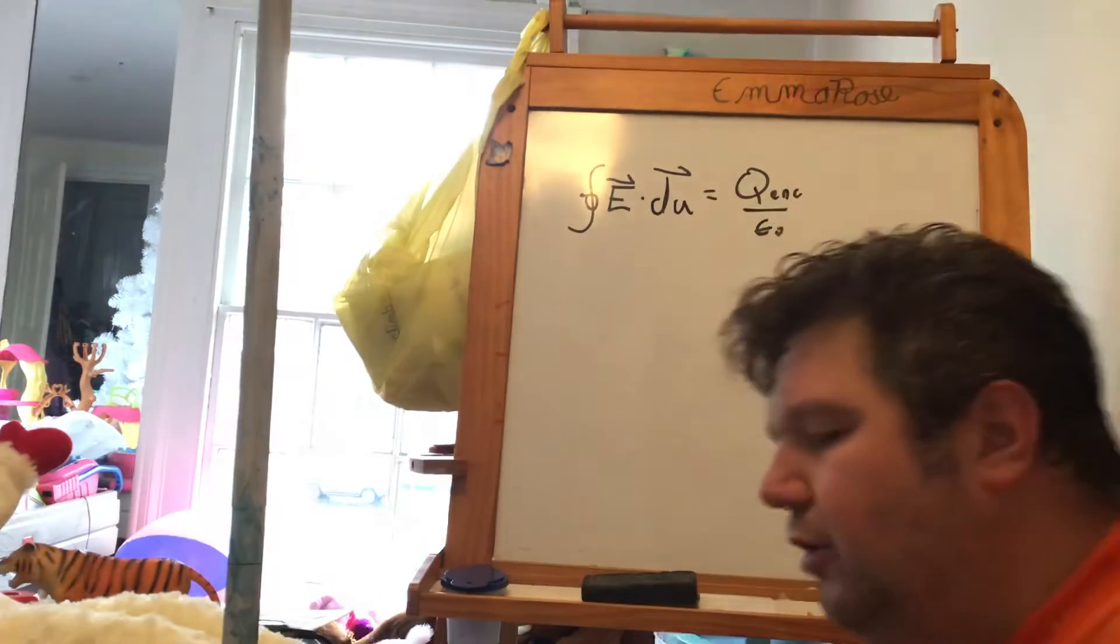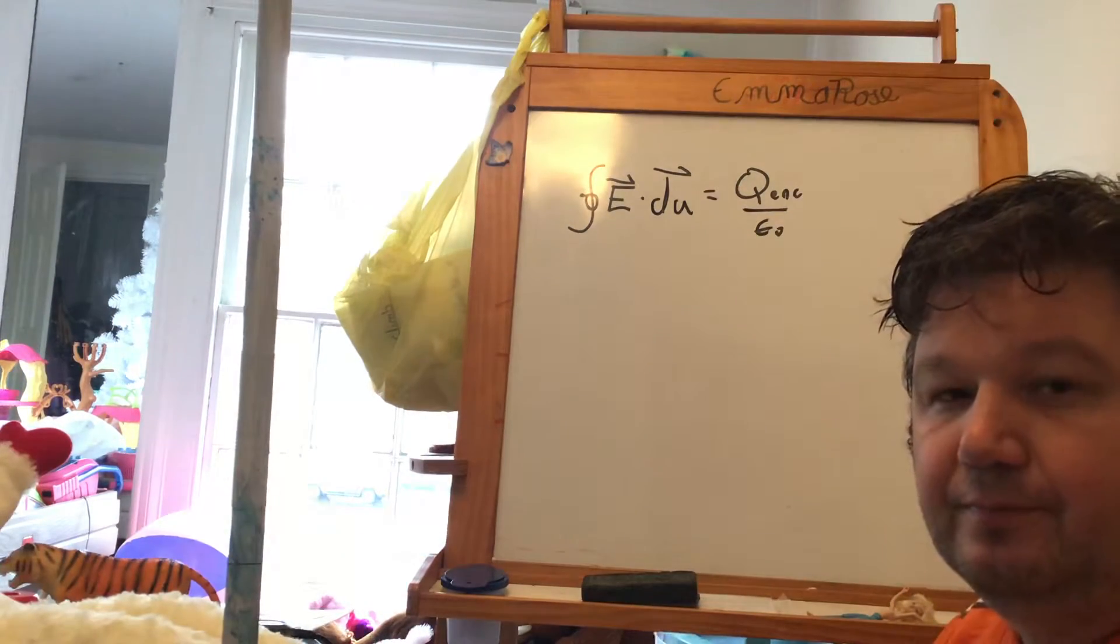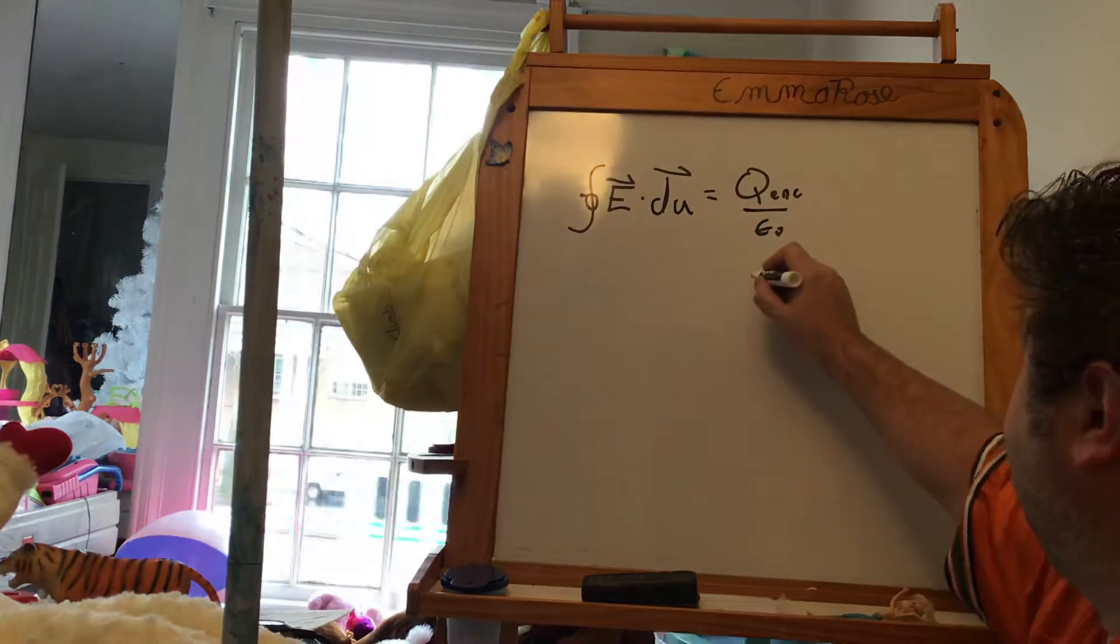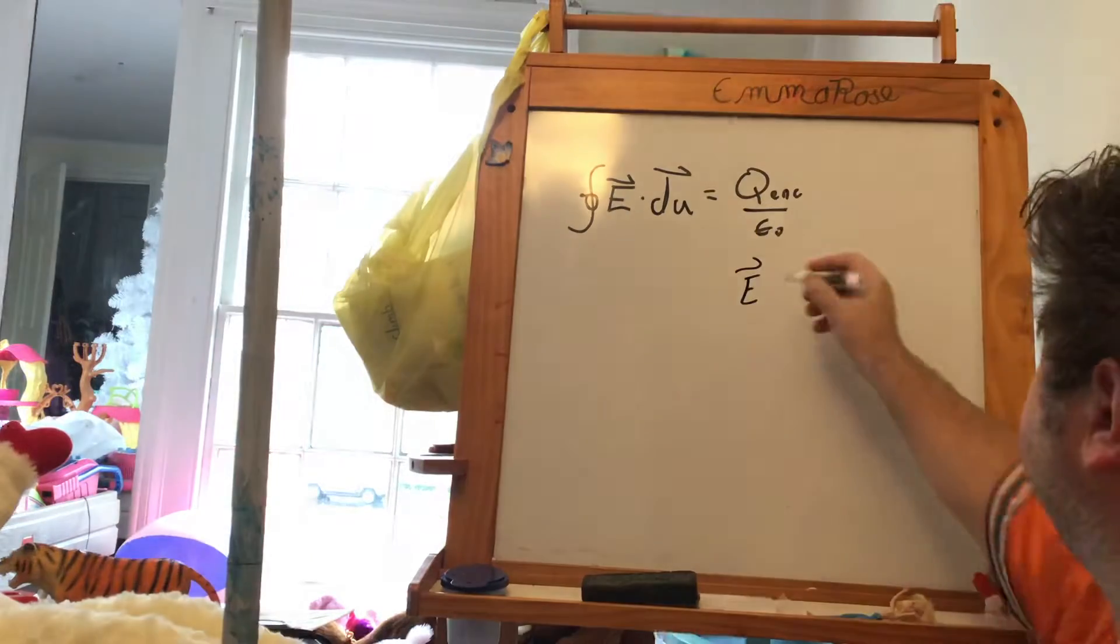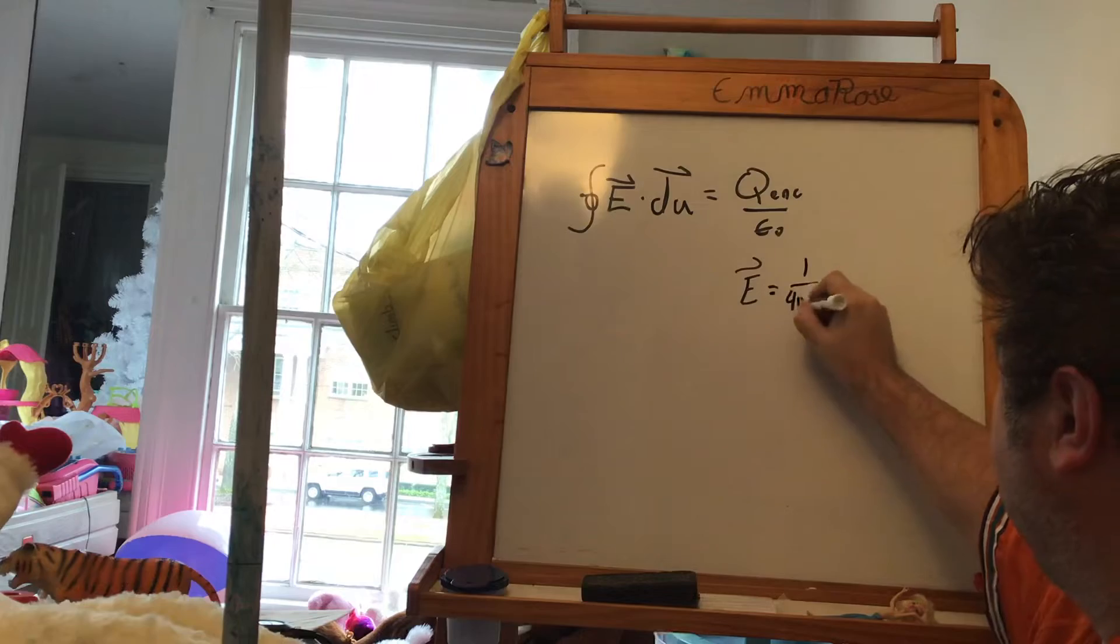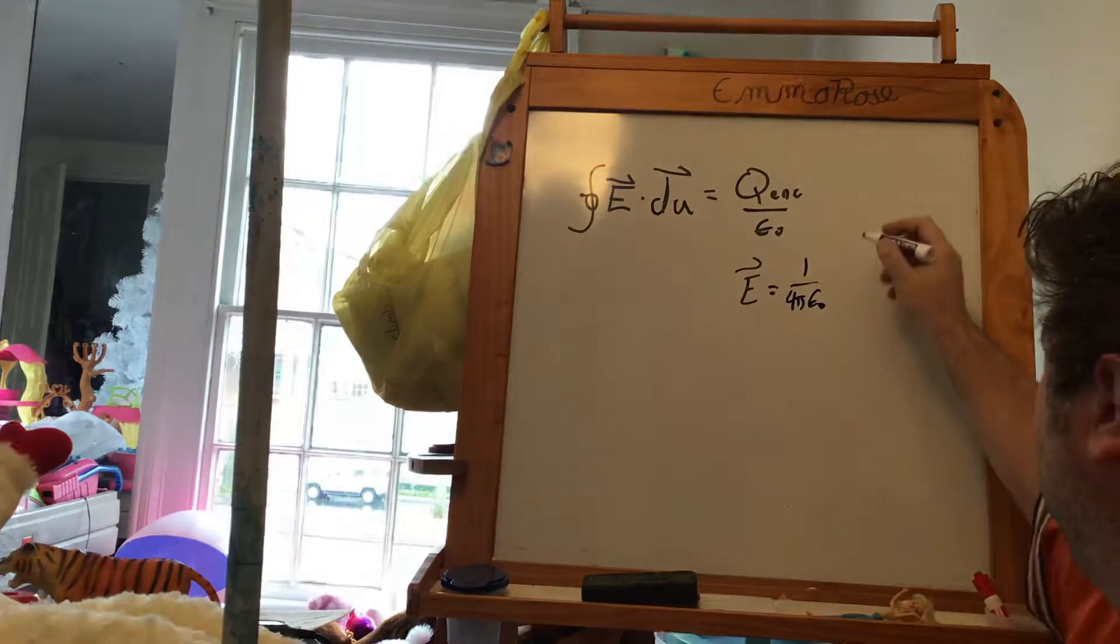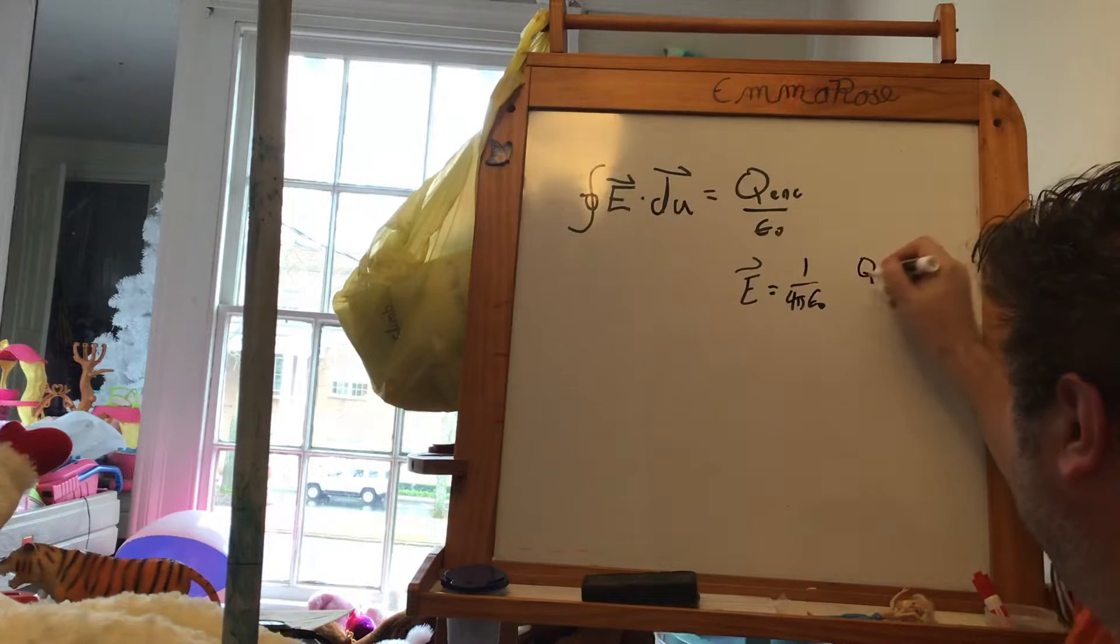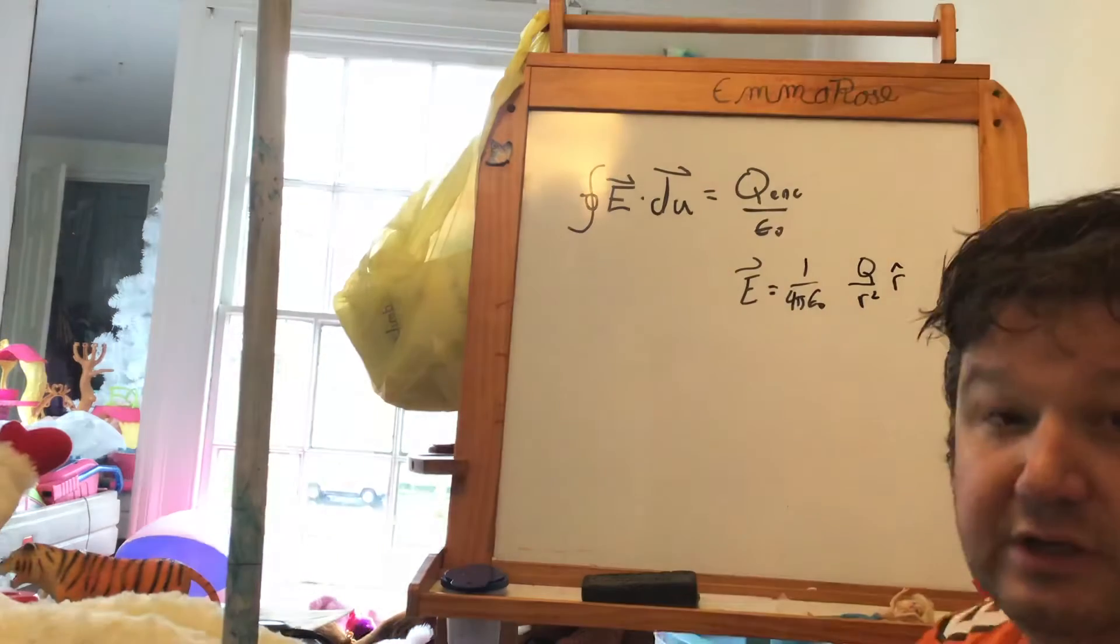So where does this come from? Coulomb's law says that for a given charge the electric field is 1 over 4π epsilon nought q over r squared times r hat.